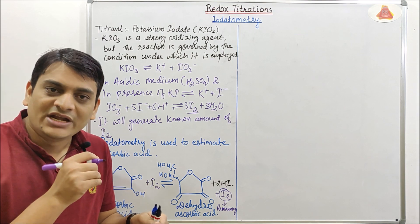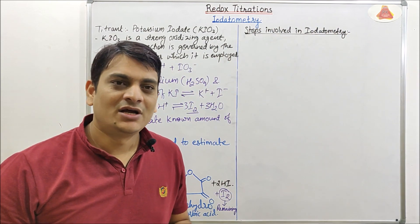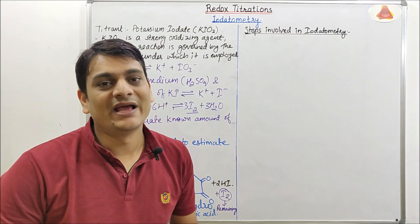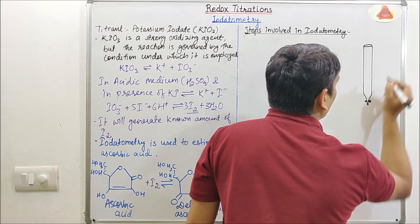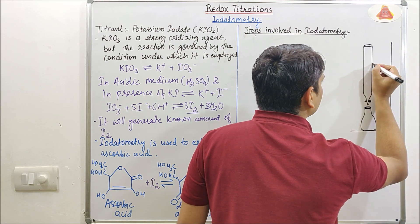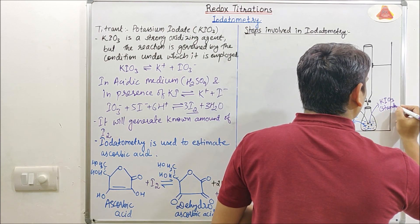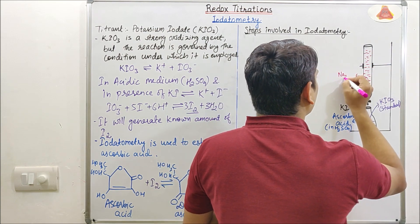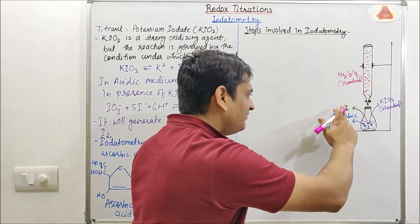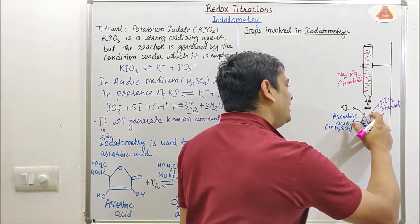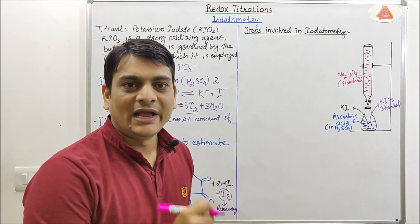Now coming to the steps involved in iodatometry. For better explanation, I will draw a diagrammatic representation. In this diagram, ascorbic acid is dissolved in H2SO4, then KI (potassium iodide) is added, then a standard solution of KIO3 is added. This solution is then titrated against standard Na2S2O3. So here I am explaining the back titration method.